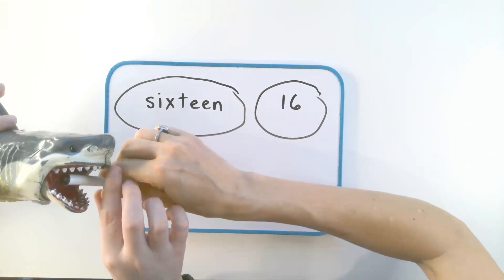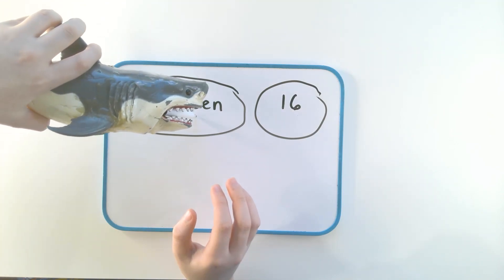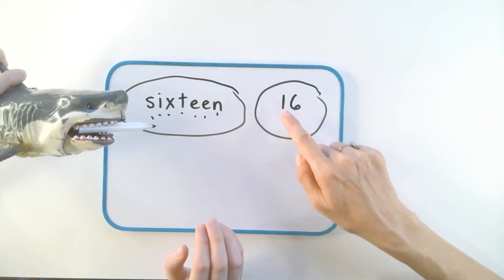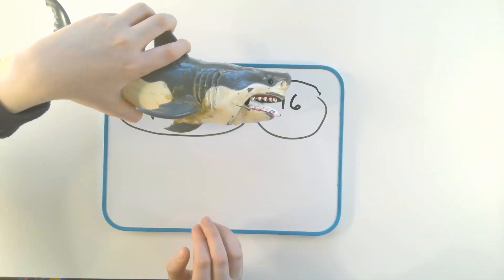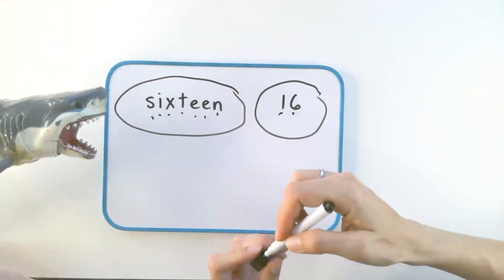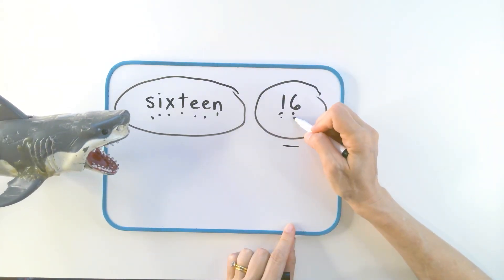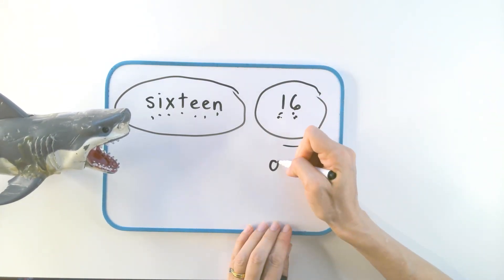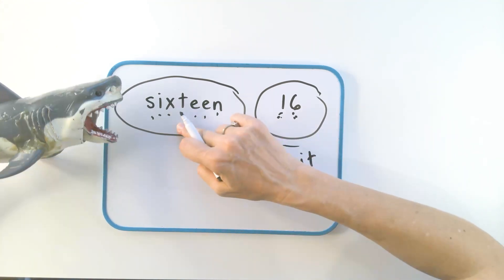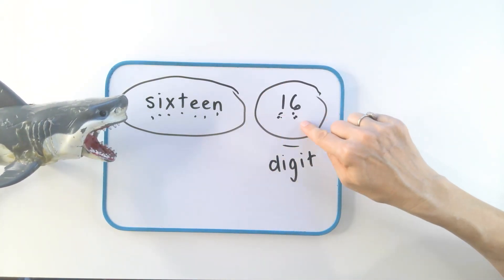Can you put a dot under each letter? Letter, letter, letter, letter, letter, letter, letter. I'm going to say 'digit' when you put a dot and point to each one. Go. Digit. Digit. Well done. Thanks, Bitey. Digit. So this number has two digits. This is the word 'digit,' and digit is like letters. A number is made up of digits.